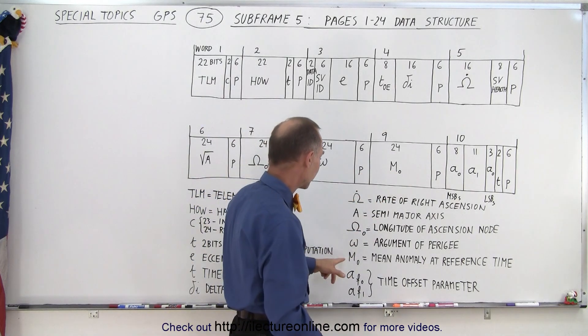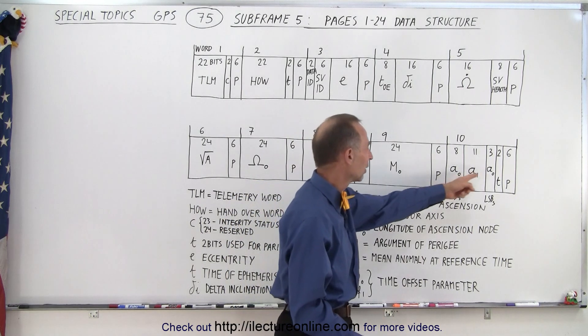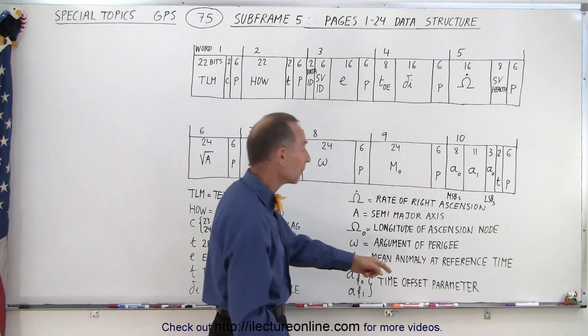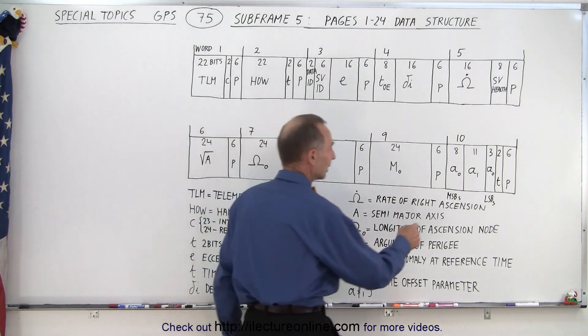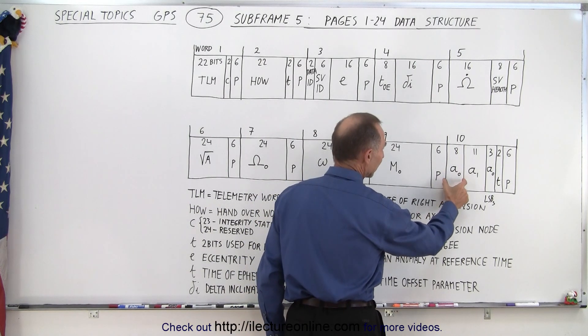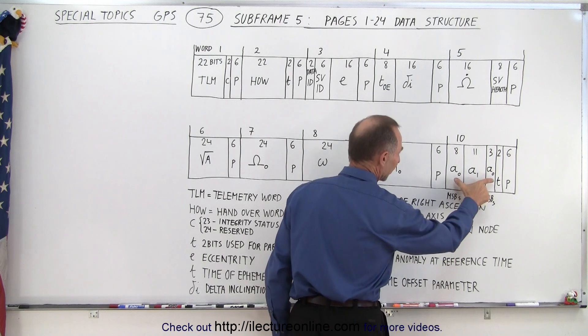Then here we have another 24 bits associated with the mean anomaly at reference time. And then we have data contained within the time offset parameters to figure out the delta t. And notice that in the case of ASAP now we have eight LSB, uh MSB bits plus the three LSB bits accounted for 11 bits.